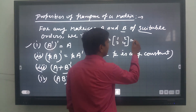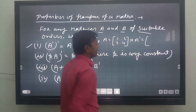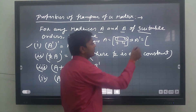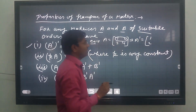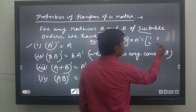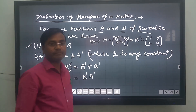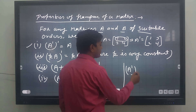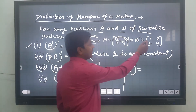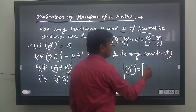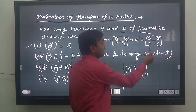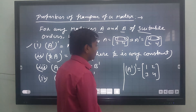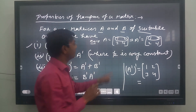Finding A transpose: the first row 1, 2 converts into the first column, giving 1, 2; and the second row 3, 4 converts into the second column, giving 3, 4. Now finding A transpose then transpose again — we change rows into columns once more: first row 1, 3 becomes first column, second row 2, 4 becomes second column, giving back the original matrix A.